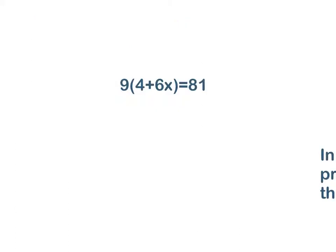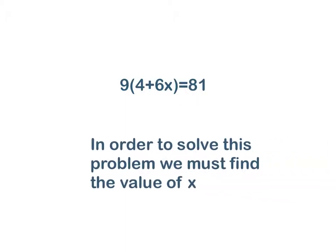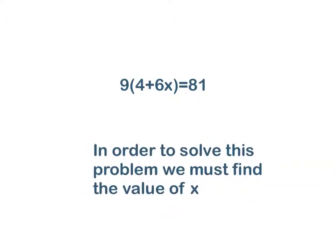Our problem today is 9 times 4 plus 6x equals 81. In order to solve this problem, we must find the value of x, as shown here next to the number 6.